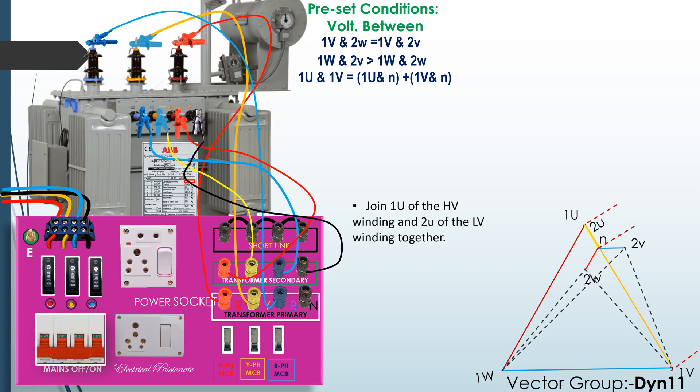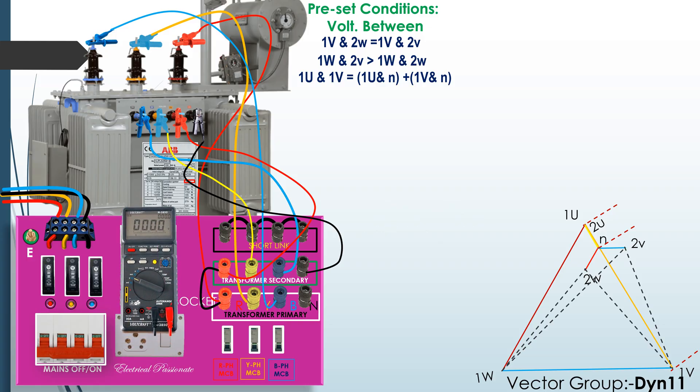Join 1U of HV winding and 2U of LV winding together at testing board. Apply 400V supply to HV terminals. Measure the voltages and record these in a table.